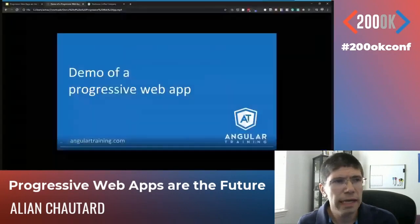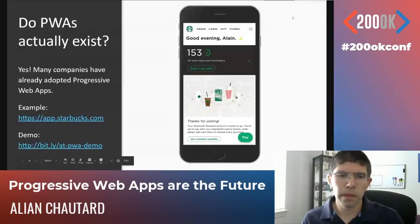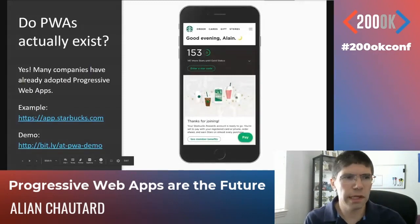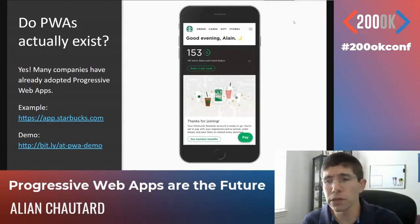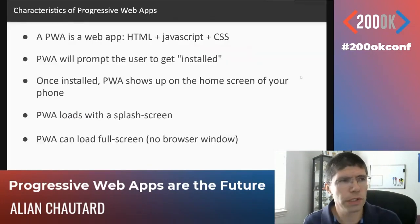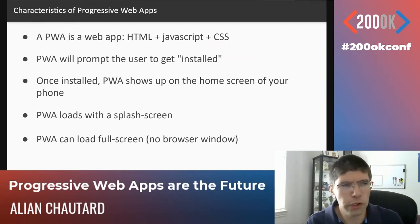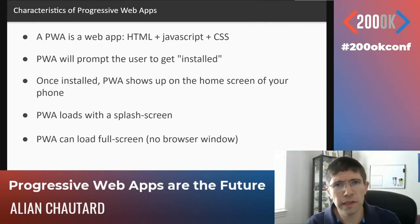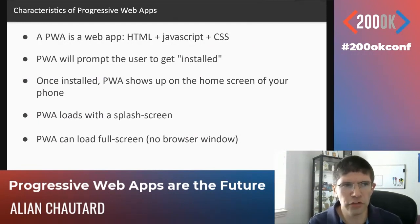These are the basic features any progressive web app would have: installability from a browser with a prompt asking if you want to install, a shortcut on your home screen to navigate back to the app, a splash screen, full-screen loading, and showing up on your phone's home screen. Once you have all that, you have a progressive web app. And what's important to remember is that all of this is just HTML, JavaScript, and CSS — there is no native code involved.